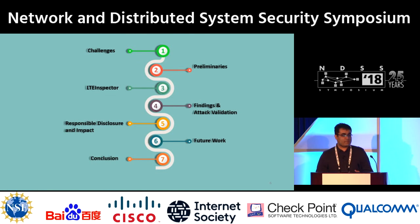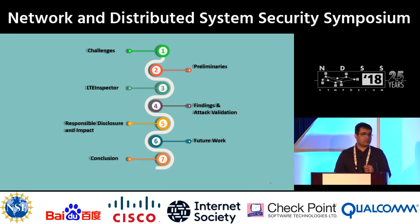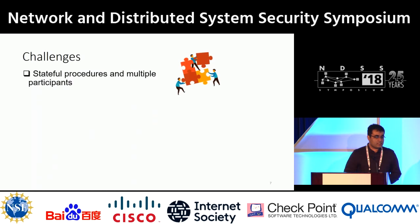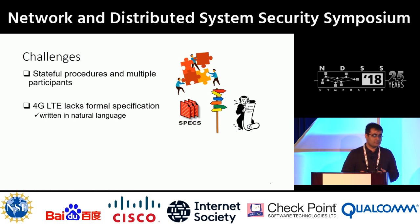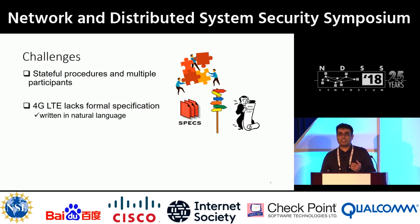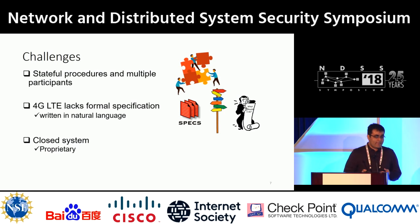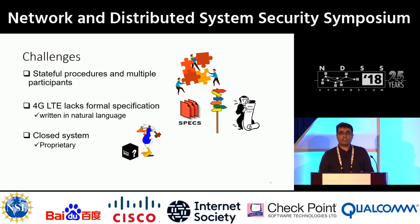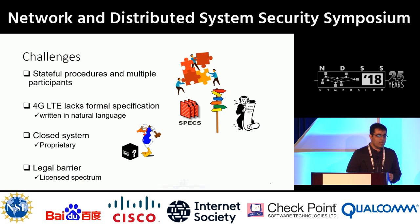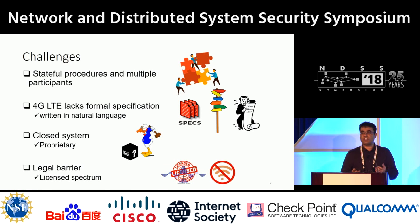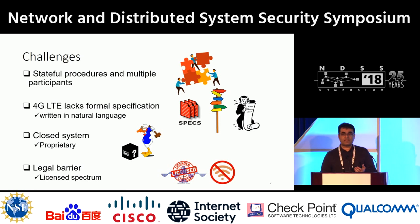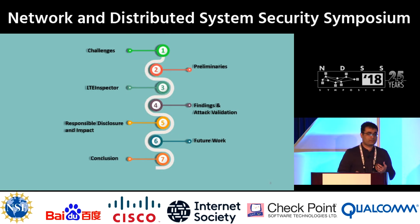Now I'm going to talk about the challenges in achieving our goal. The first challenge is that there are many procedures in 4G LTE which are stateful in nature and there are multiple participants that may cause scalability issues. The second challenge is that 4G LTE lacks a formal specification, which may cause ambiguity. The third challenge is that most operational networks are closed systems, so any testing approach should be black-box type. Operational networks like major carriers operate on licensed spectrum, so we cannot send messages to the core network to test them.